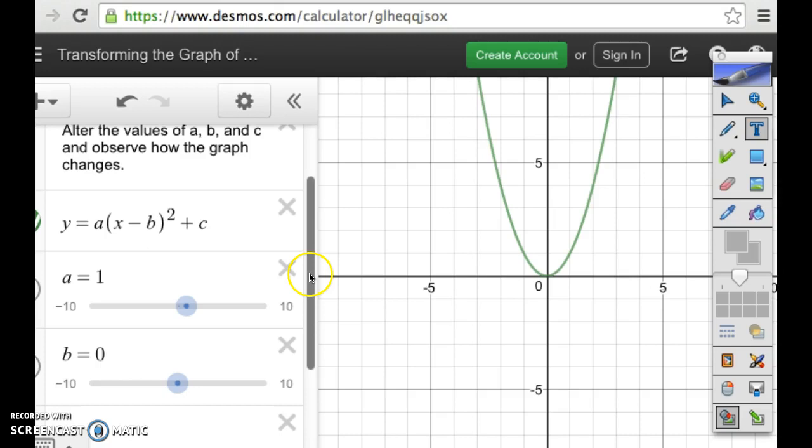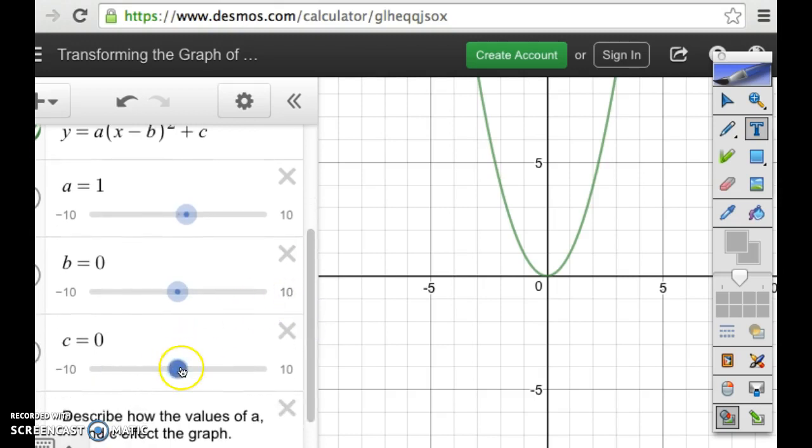What does the c do? What happens when we change that c? Does the shape of the parabola change? No. The shape of the parabola is not changing. If you're going positive, it's moving that parabola up. If you're going negative, it's moving that parabola down. The shape isn't actually changing. You're just seeing more of the parabola when you move it down.